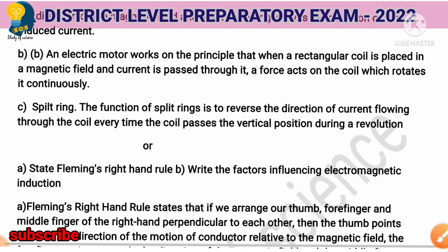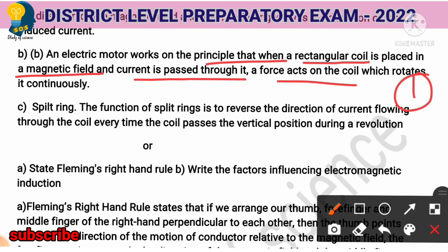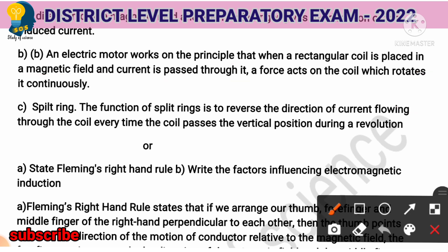The working principle of an electric motor: an electric motor works on the principle that when a rectangular coil is placed in a magnetic field and current is passed through it, a force acts on the coil which rotates it continuously. That earns 1 mark. The function of split rings is to reverse the direction of current flowing through the coil every time the coil passes the vertical position during its revolution. That earns the third mark.